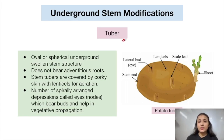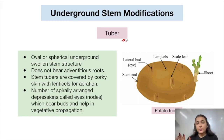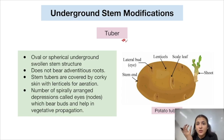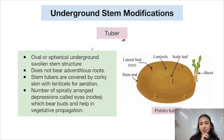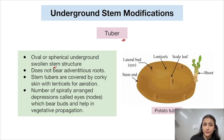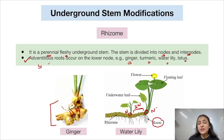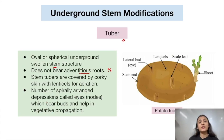A tuber is an oval or spherical underground swollen stem structure. It does not bear adventitious roots — this is a major differentiating factor from rhizomes. Stem tubers are covered by a corky skin with lenticels for aeration. Lenticels are small pores responsible for gaseous exchange. A number of spirally arranged depressions called eyes are present on the potato tuber.